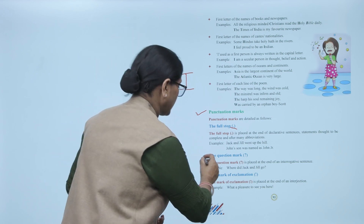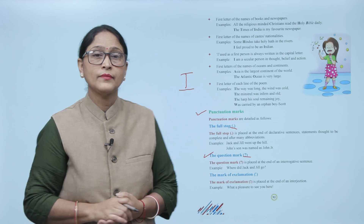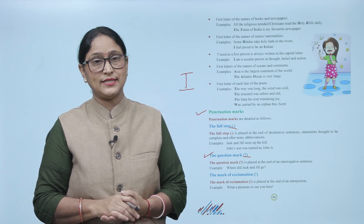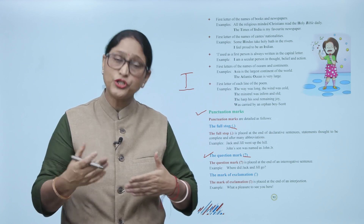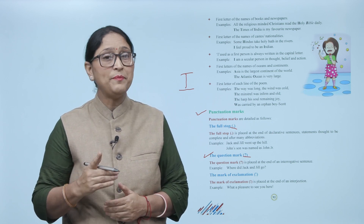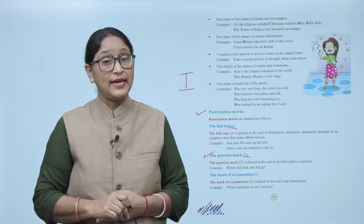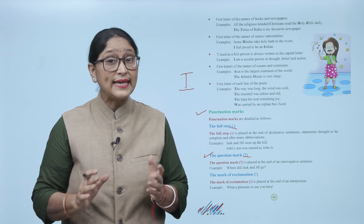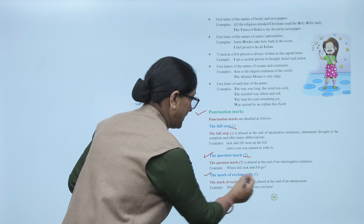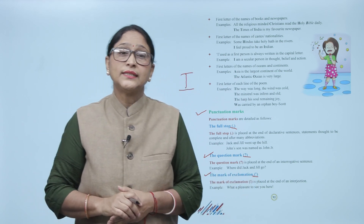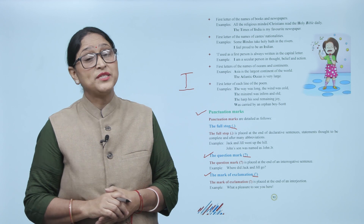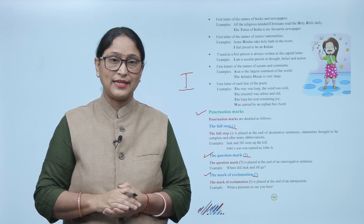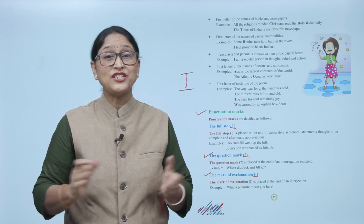The question mark is placed at the end of an interrogative sentence — a sentence in which we ask a question. Example: 'Where did Jack and Jill go?' The mark of exclamation is placed at the end of an interjection. Example: 'What a pleasure to see you here!'